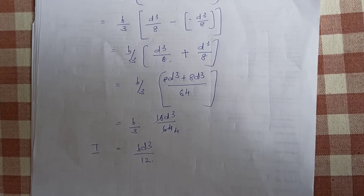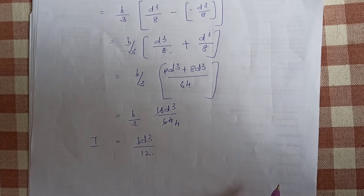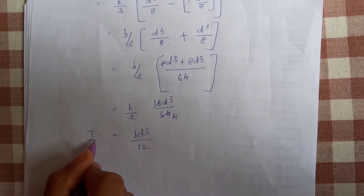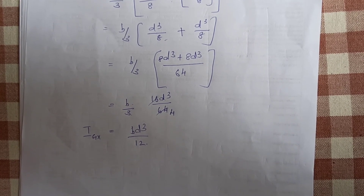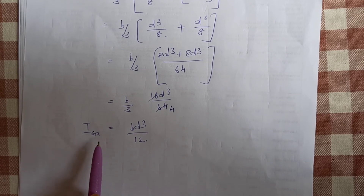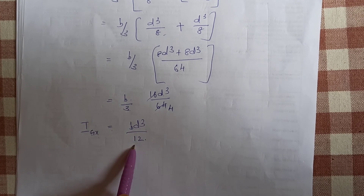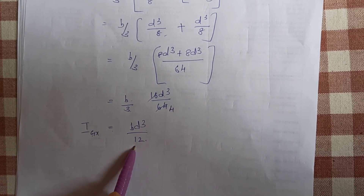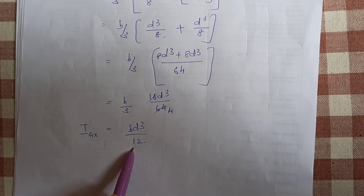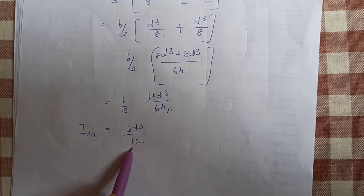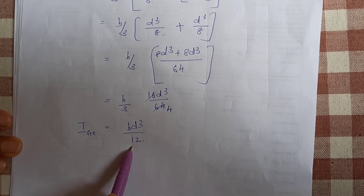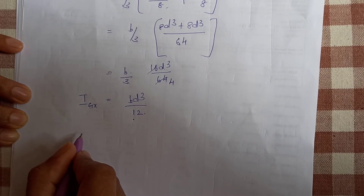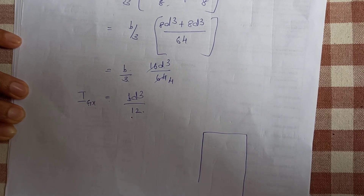Moment of inertia of the rectangle about the centroidal axis — the centroidal x-axis. This is why we have reference axis. Moment of inertia of rectangle about centroidal x-axis equals B D cube by 12. Similarly, the moment of inertia of the rectangle about the centroidal y-axis is D B cube by 12.